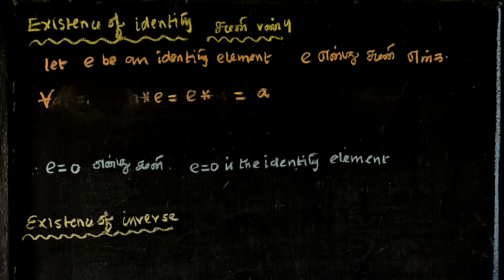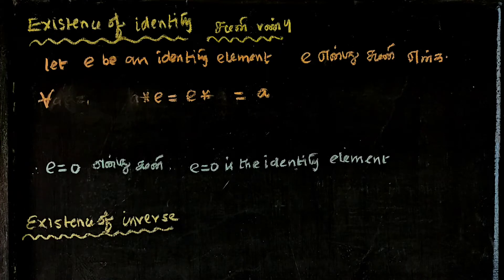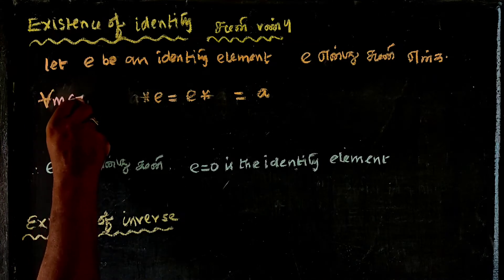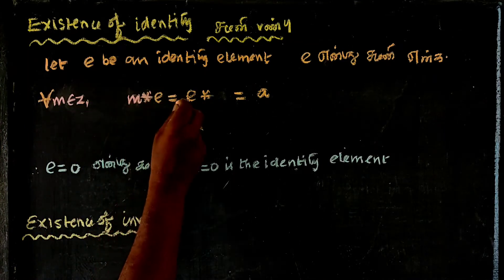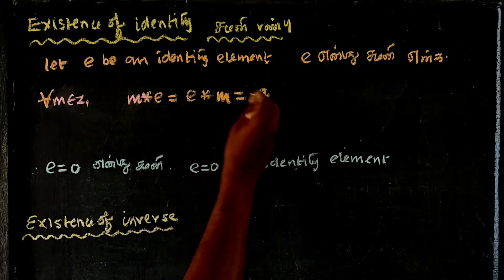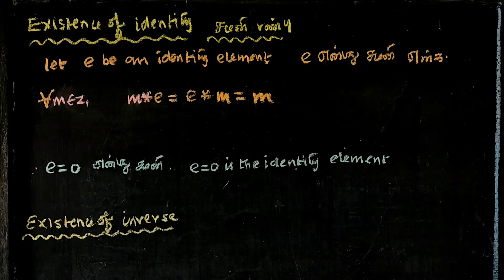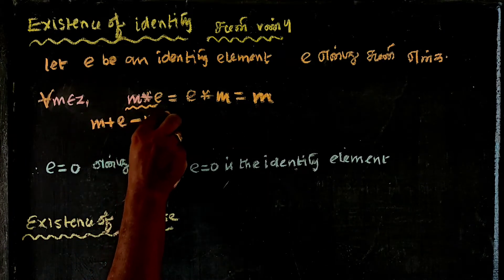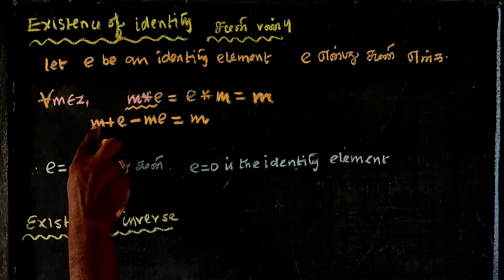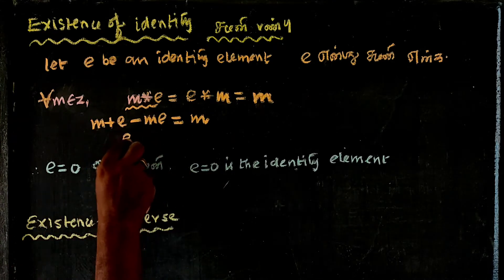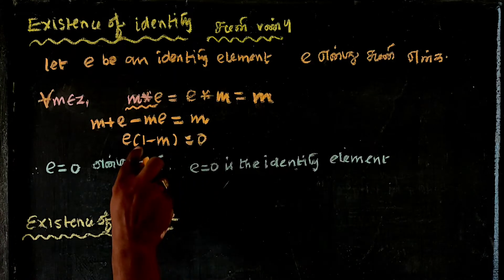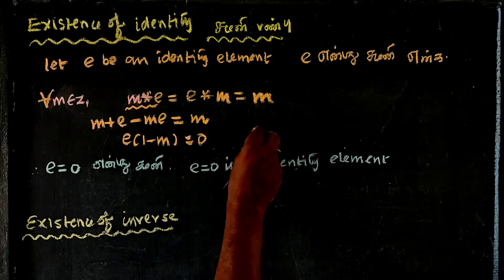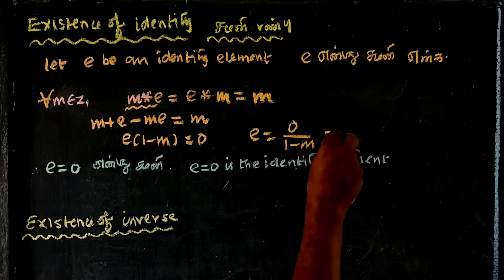Let's look at the existence of identity. Let E be an identity element. For all M belonging to Z, M star E is equal to M. The sum of two numbers minus the product of two numbers equals M. Solving: E times (1 minus M) equals 0. Therefore E equals 0 divided by (1 minus M), which equals 0. And 0 belongs to Z.